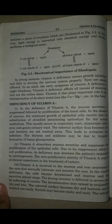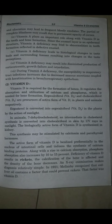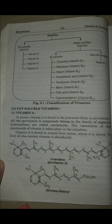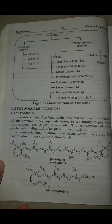In the previous lecture, we discussed vitamin A and its biochemical functions. Before that, we covered fat-soluble vitamins — four categories: vitamin A, vitamin D, vitamin E, and vitamin K. We started with vitamin A. The precursor form of vitamin A is called pro-vitamin A, which belongs to the family of pigmental hydrocarbons called carotenoids. This conversion is carried out inside the intestine. The structure of beta-carotene, the pro-vitamin or precursor for vitamin A, is shown here.